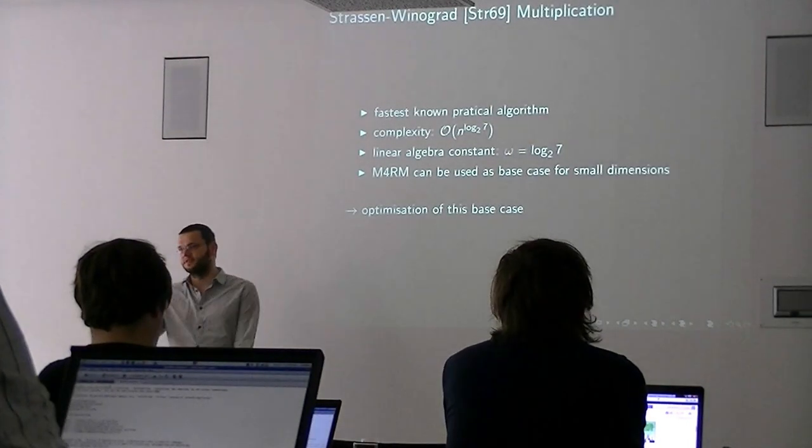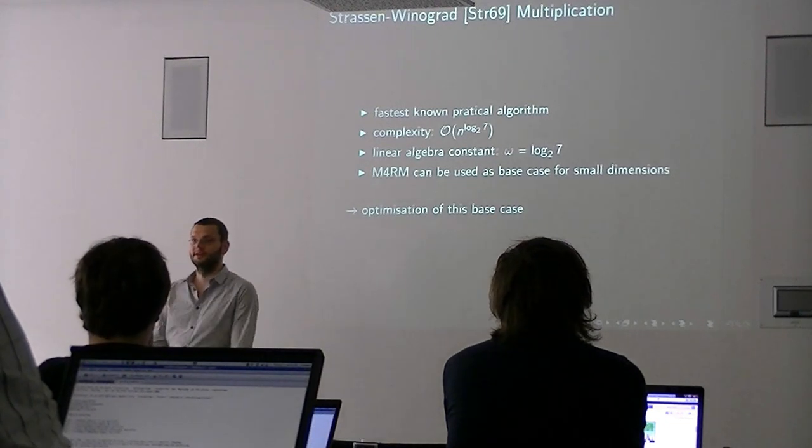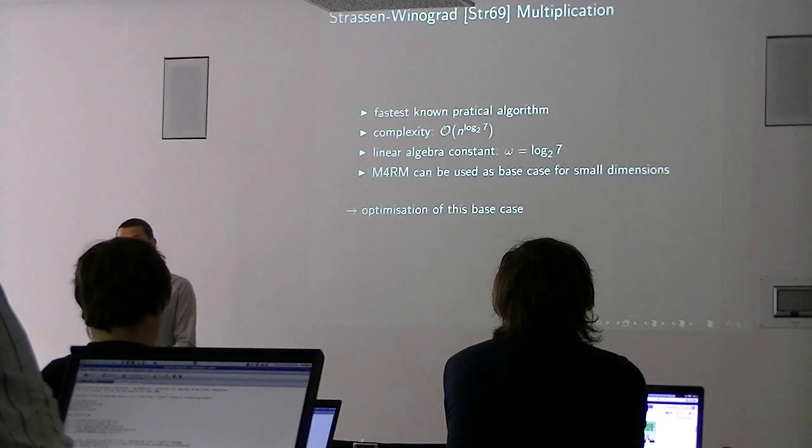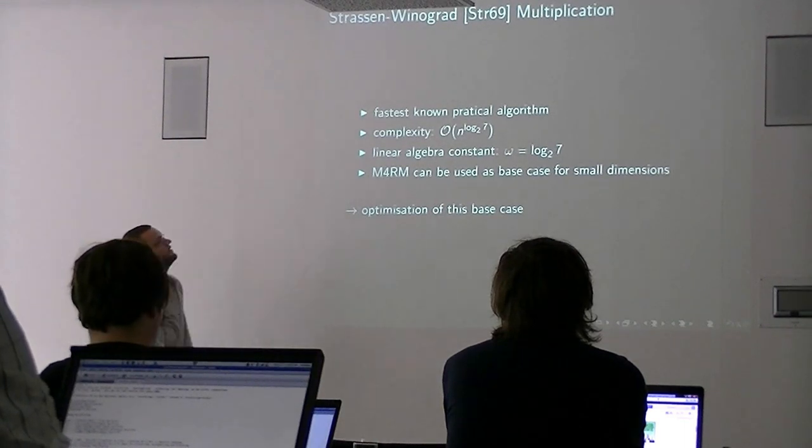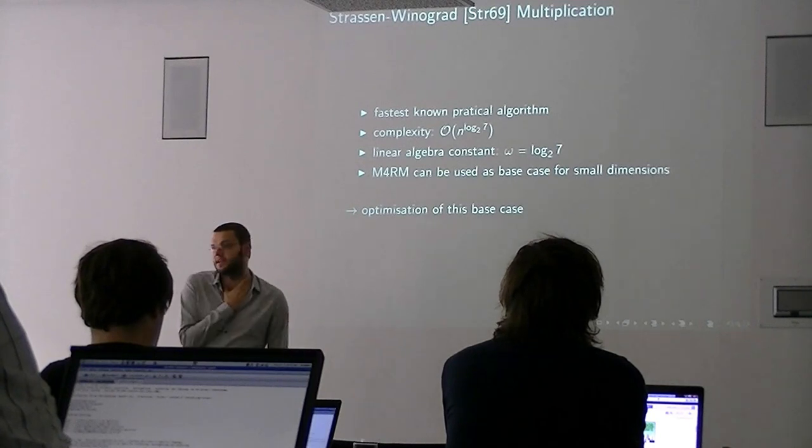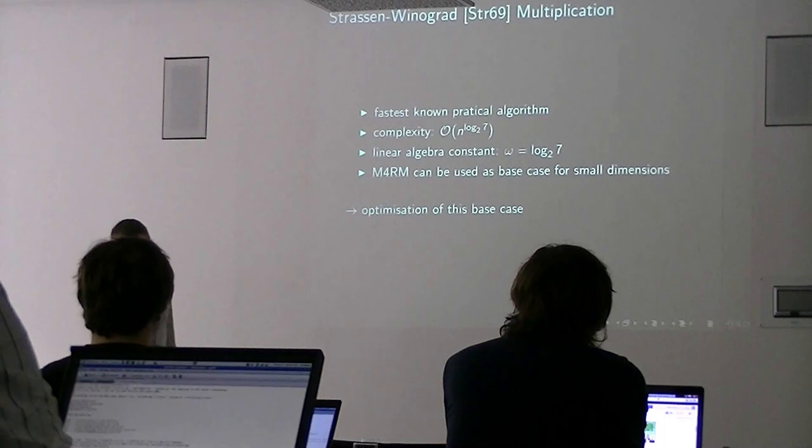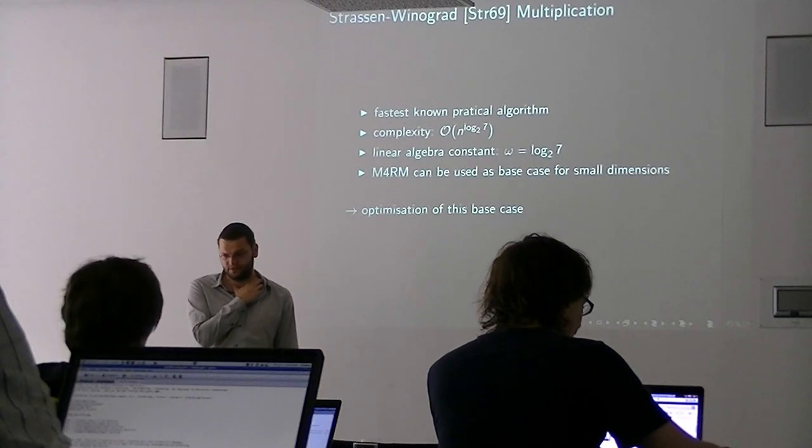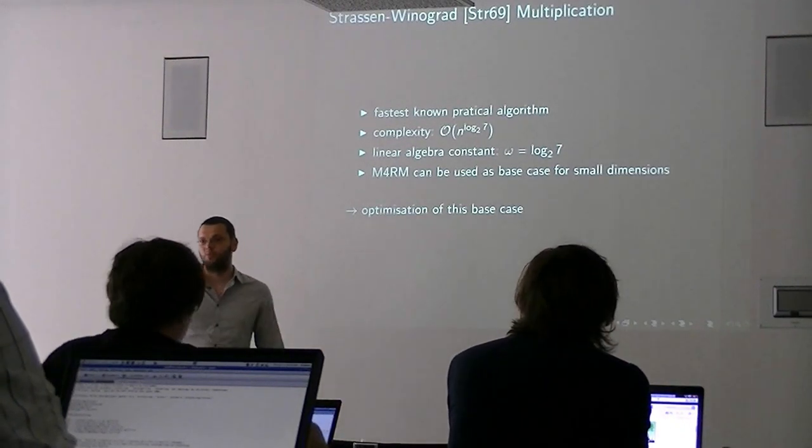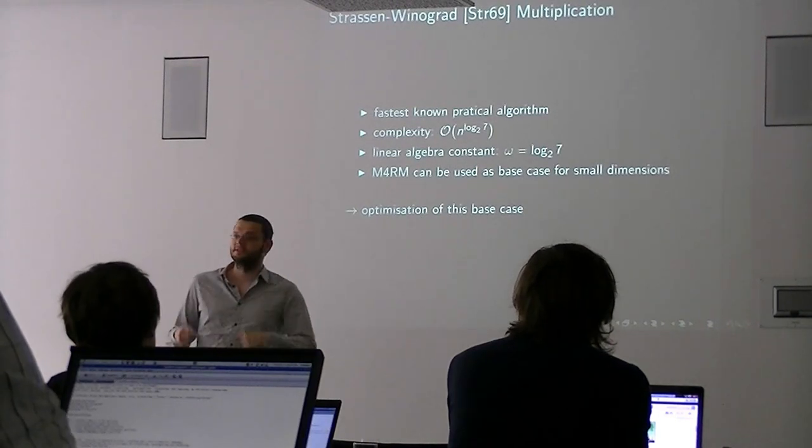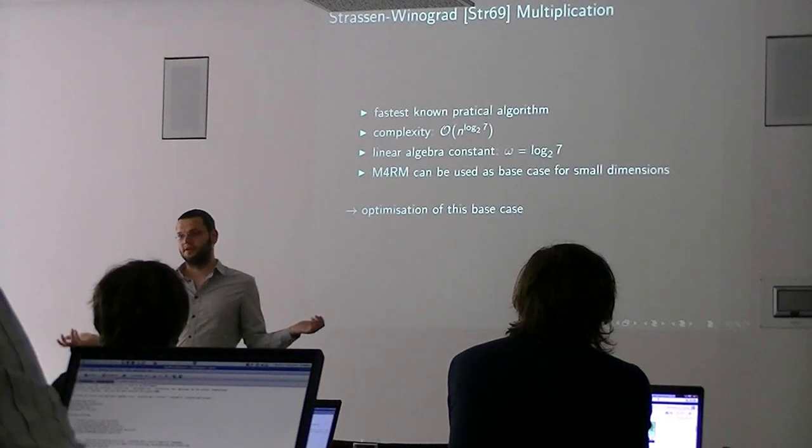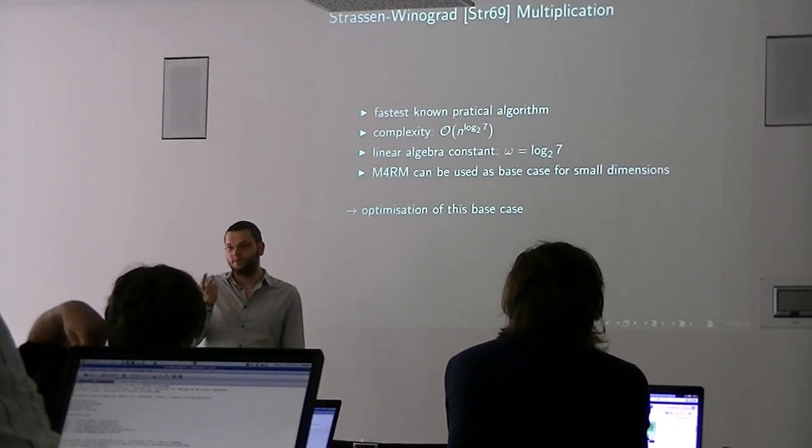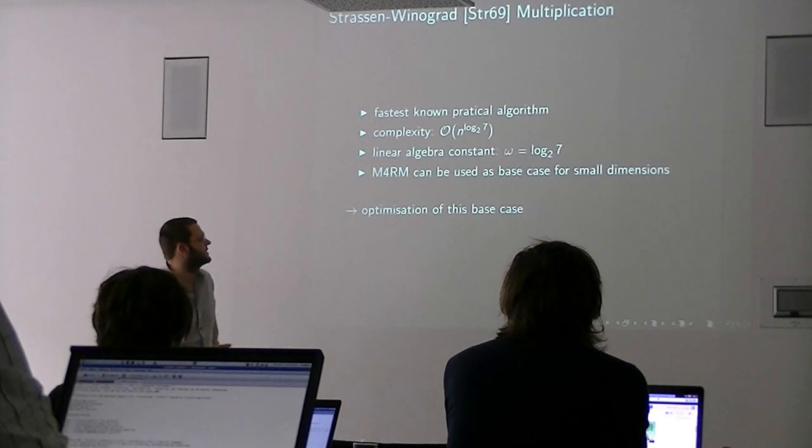What this gives you is complexity of N cubed divided by log N. So you're saving log N by choosing your parameters carefully. But this is, of course, not the most efficient way of multiplying two matrices in practice. For dense matrices, the best thing we know in practice is Strassen-Winograd multiplication, which gives us this infamous complexity exponent 2.807, so log base 2 of 7.